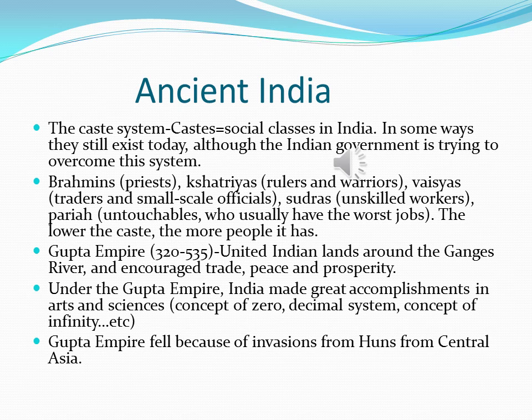When we talk about ancient India, we have to discuss the caste system — really social classes in India. In some ways they still exist today, although the Indian government is trying to overcome this system. The castes are: Brahmins, priests; Kshatriyas, rulers and warriors; Vaishyas, traders and small-scale officials; Shudras, unskilled workers; and Pariahs, or untouchables, who usually have the worst jobs. The lower the caste, the more people it has. This is a system that still continues to affect India even to this day.